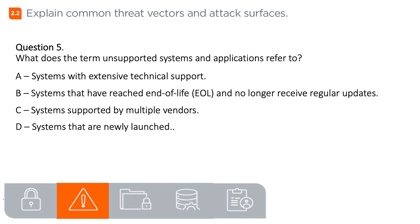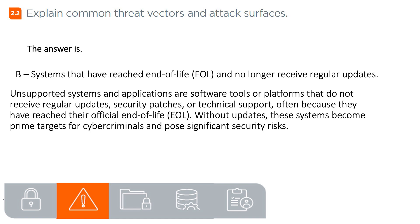Question 5. What does the term unsupported systems and applications refer to? A. Systems with extensive technical support, B. Systems that have reached end-of-life (EOL) and no longer receive regular updates. The answer is B. Systems that have reached end-of-life (EOL) and no longer receive regular updates, security patches, or technical support, often because they have reached their official end-of-life. Without updates, these systems become prime targets for cybercriminals and pose significant security risks.